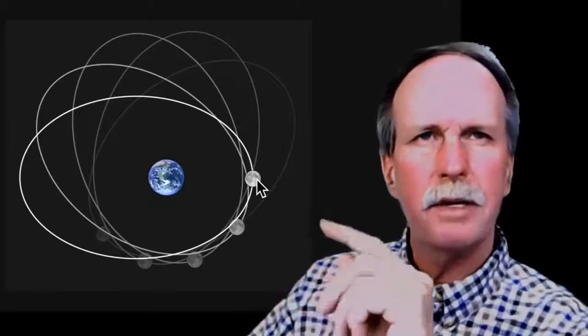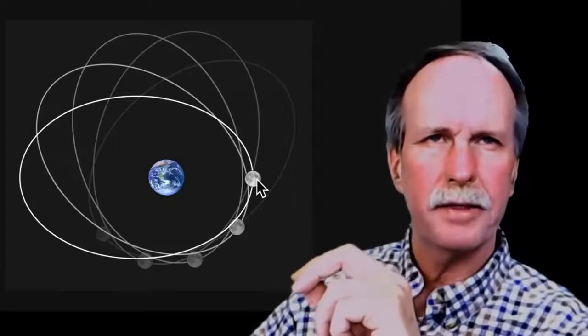The second orbital period has to do with the shape of the orbit. There's a point where the moon is closest to the earth, called perigee, and when it's farthest away, called apogee. Going from perigee to perigee is called the anomalistic month, and it's about two days less than the synodic month, coming in at 27.55 days.